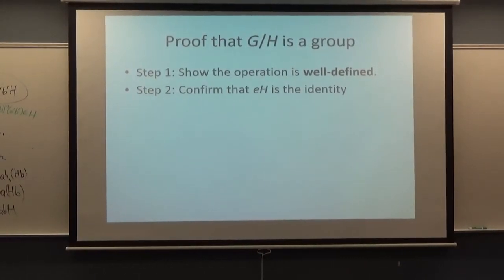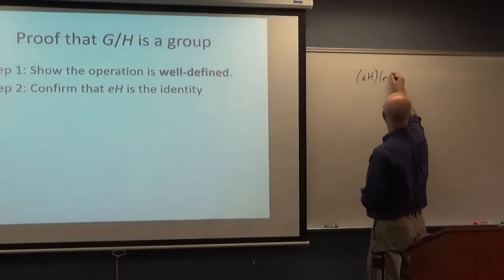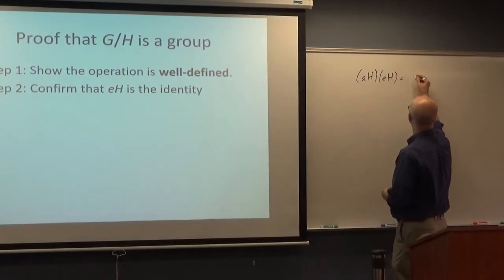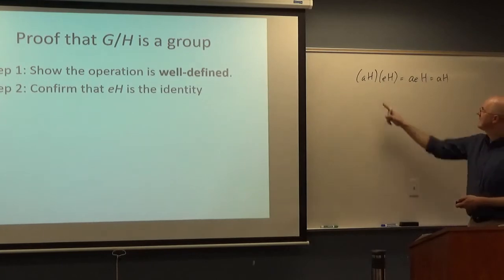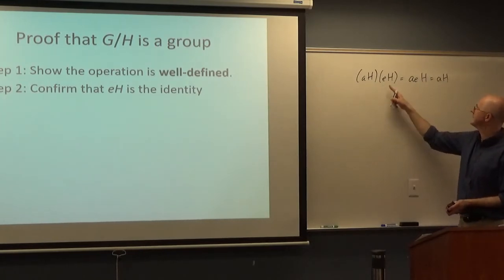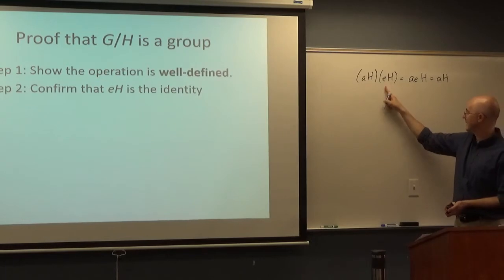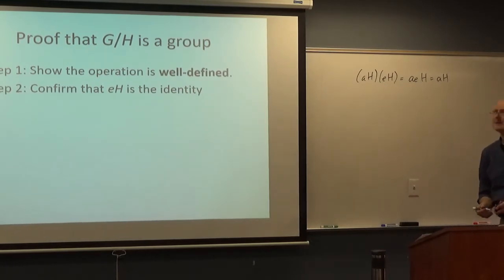We can confirm that eH is the identity element of the factor group, and that's just going to be by definition of coset multiplication. Given any left coset — any element of the factor group — I multiplied by this element. I did it on the right here, but I could have done it on the left. You get back to what you started with; eH is the identity element.